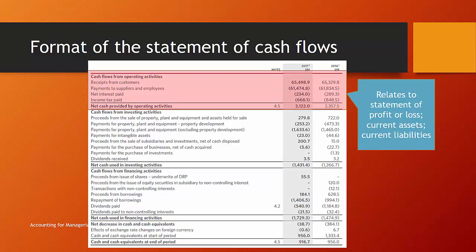Cash flows from operating activities is probably the most important section. If you're in business, this figure needs to be positive — if you can't generate positive operating cash flows, you'll have a problem longer term. These figures relate to the statement of profit or loss plus adjustments for current assets and liabilities, including prepayments and accrued expenses. The two biggest items are receipts from customers and payments to suppliers, and receipts are larger — resulting in a positive cash flow of $3.122 billion.